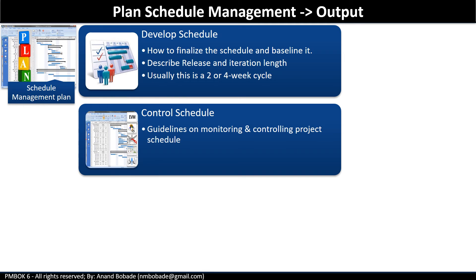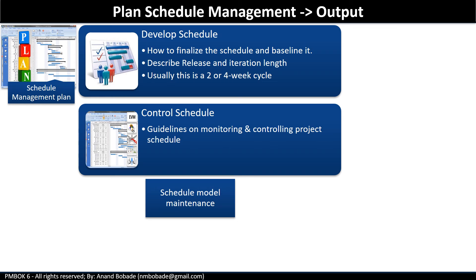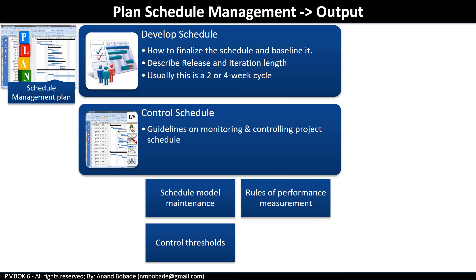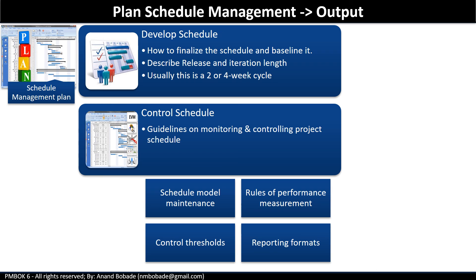For control schedule, the plan contains guidelines on monitoring and controlling the project schedule, including project schedule model maintenance, the process used to update status and record progress, and rules for performance measurement — for example, how earned value measurement will be used to monitor schedule performance. It also includes control thresholds: variance thresholds for monitoring schedule performance, and if performance is not within an agreed threshold, what actions or procedures are to be followed. Finally, it includes reporting formats — the format, frequency, and recipients of the schedule progress report. All this information will be included inside the schedule management plan.